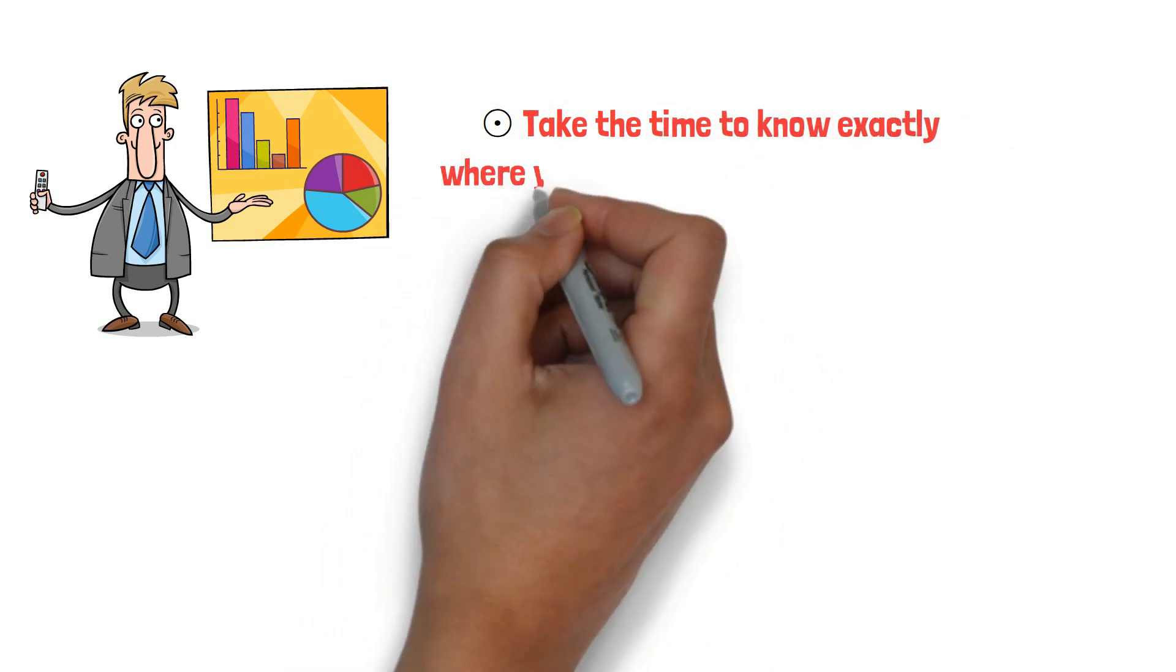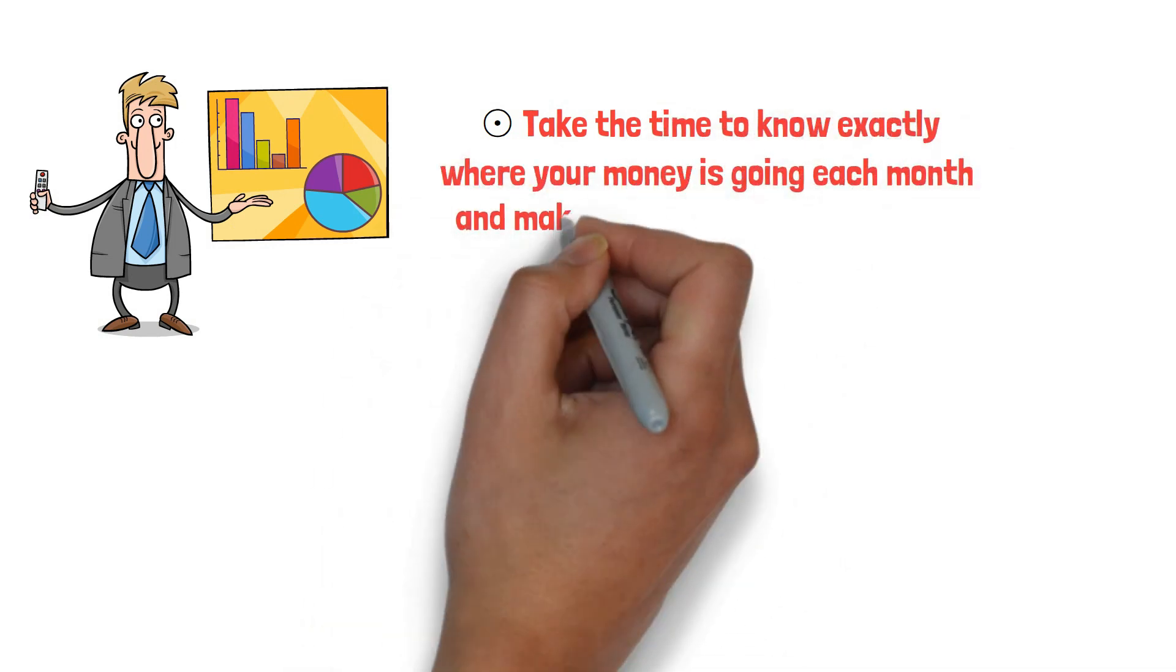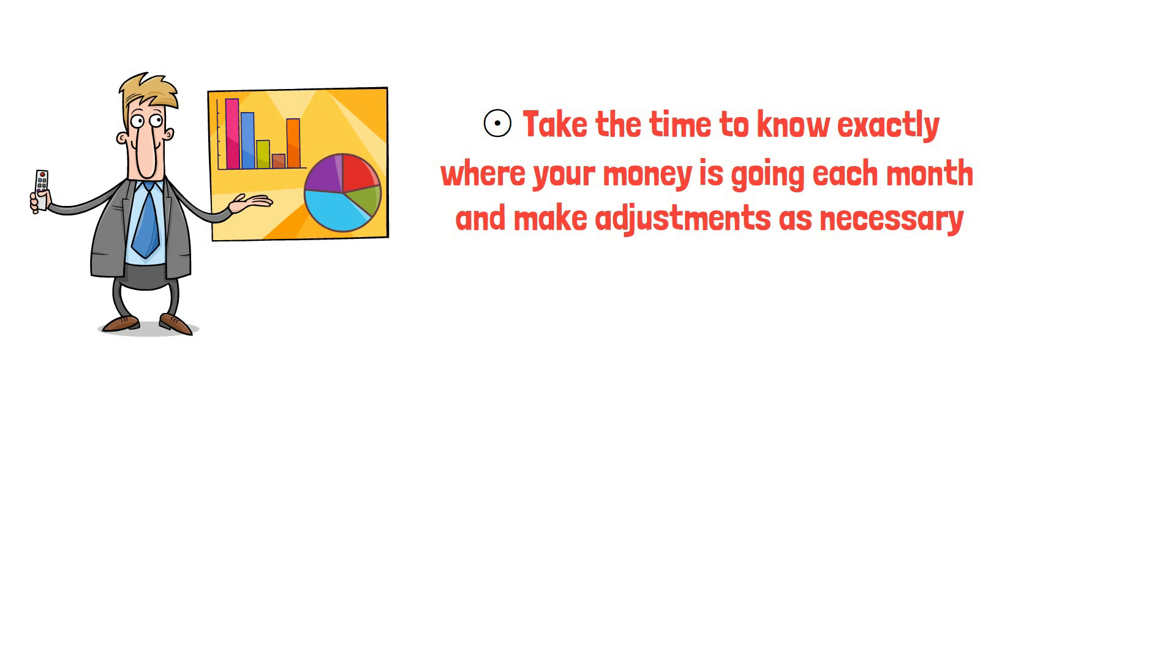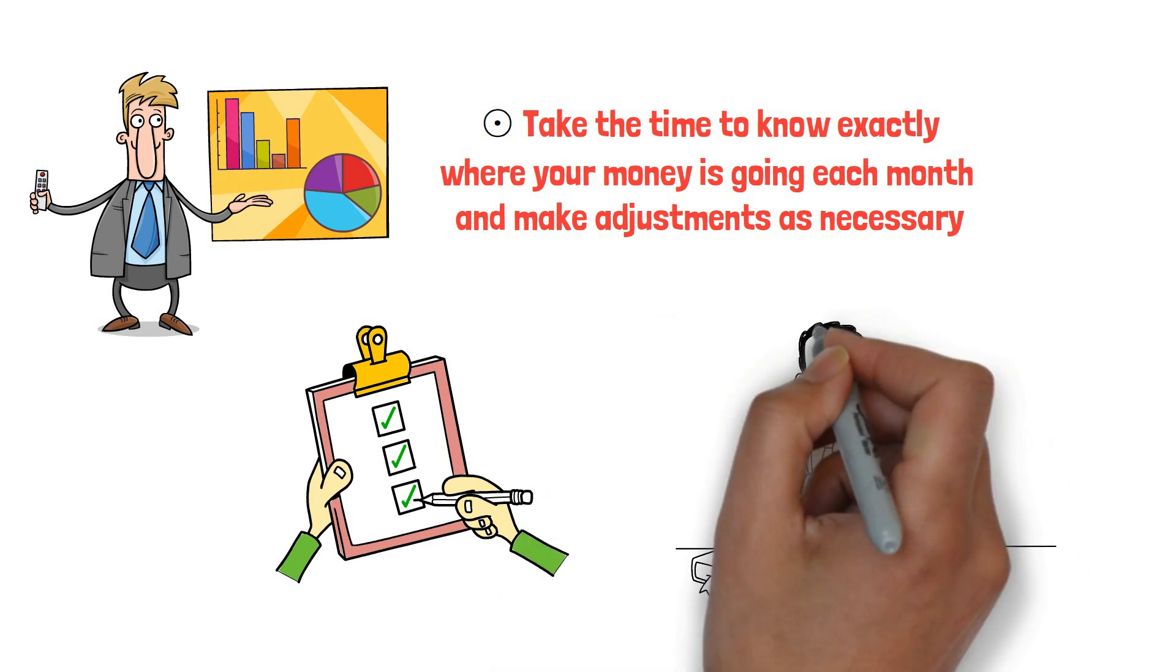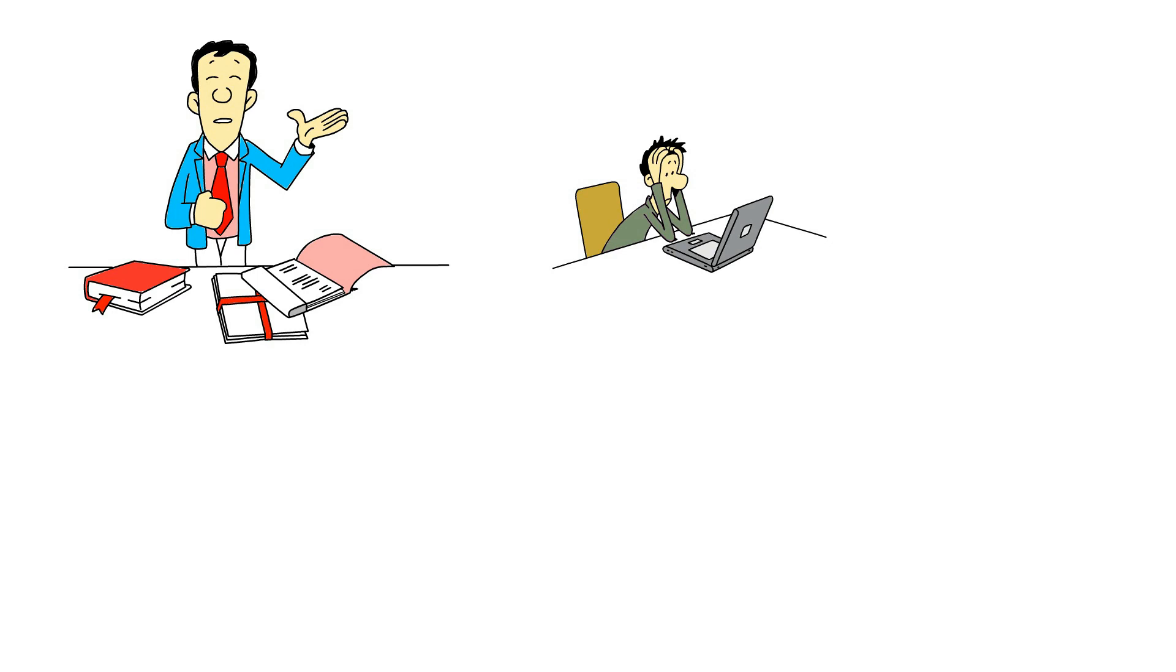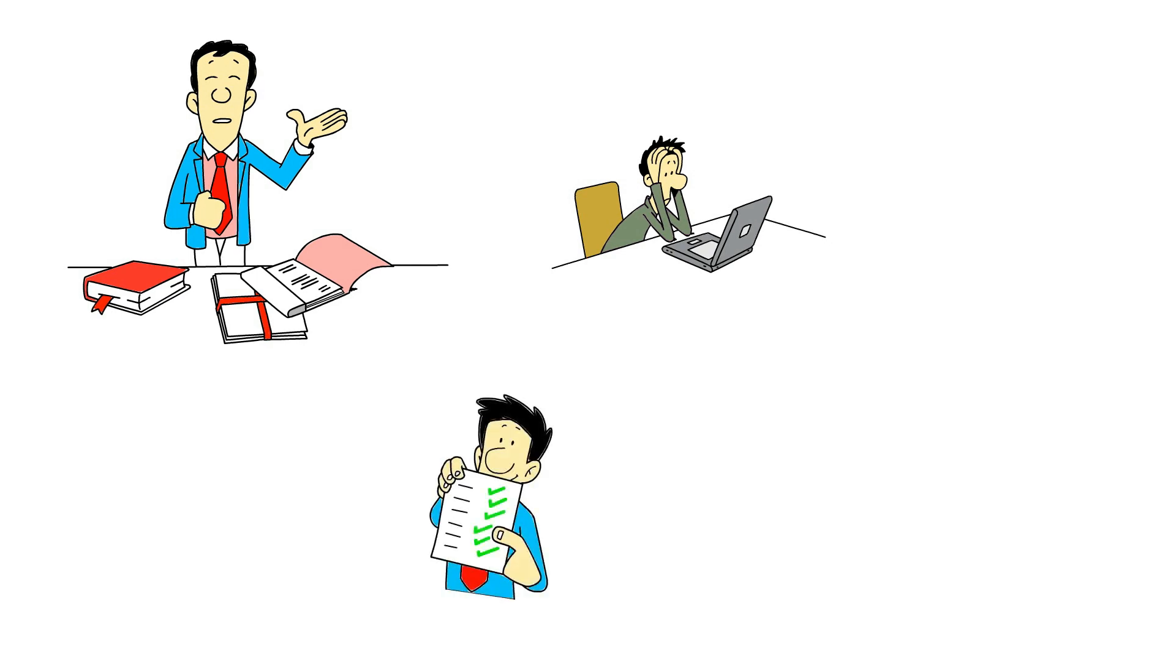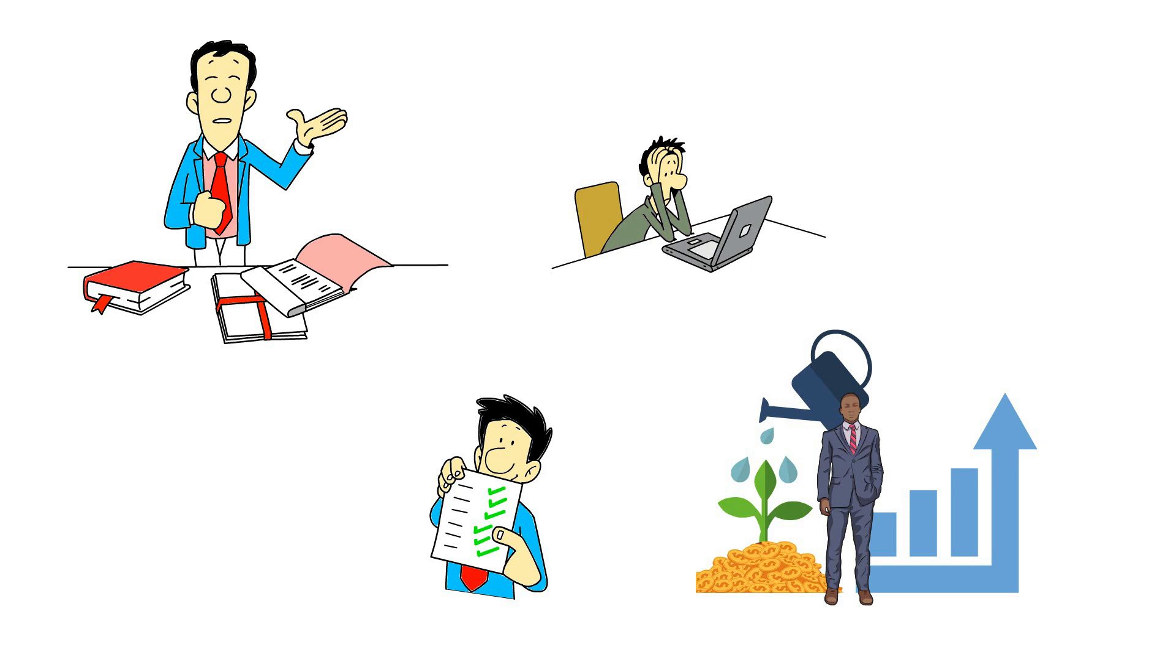Take the time to know exactly where your money is going each month and make adjustments as necessary. Warren Buffett recommends using a simple ledger or a simpler tool to record every expense. This way, you are always aware of where your money is allocated. While this may initially seem tedious, it is vital if you want to take control of your finances and make meaningful progress.